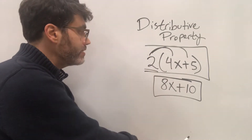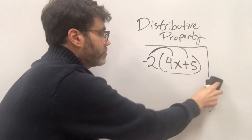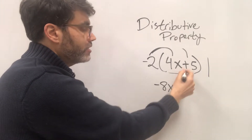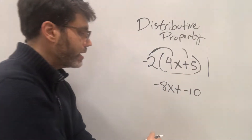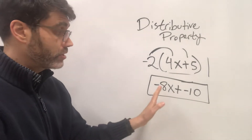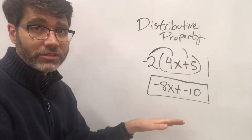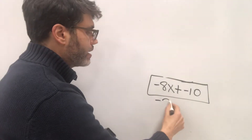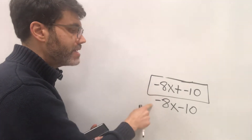Now let's do it with negative 2 out front. If you have negative 2 out front, you do exactly the same distribution. Negative 2 times 4x is negative 8x. You still bring down the plus sign because it's inside the parentheses, and then negative 2 times 5 is negative 10. So you may notice — this result of negative 8x plus negative 10 — some people will write it as negative 8x minus 10 instead. Both expressions mean the exact same thing and are absolutely equivalent.